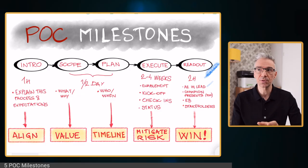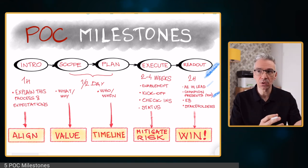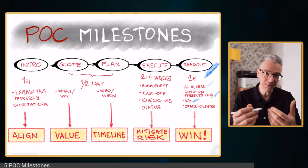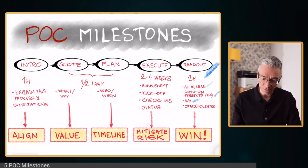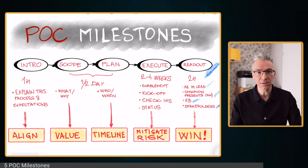It's really important that your technical champion — the person who was in charge of the POC on the customer side — actually presents the POC goals and what has been achieved in the POC. Because when it comes from their mouth, it's going to make a bigger impact for all the stakeholders on the customer side. It's important that we have the economic buyer — the person who is going to have the budget and sign the deal — and all other stakeholders who have a saying or influence in this decision also in this meeting.